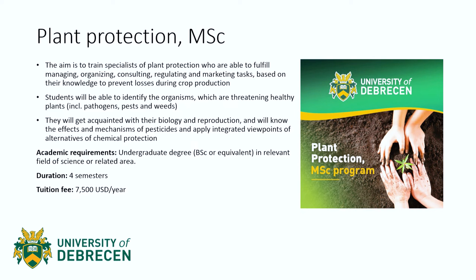Next is the plant protection master's degree. The aim is to train plant protection specialists who are able to fulfill managing, organizing, consulting, regulating, and marketing tasks to prevent losses during crop production. Students will be able to identify organisms threatening healthy plants — for example, pathogens, pests, and weeds — and will learn about their biology and reproduction, the effects and mechanisms of pesticides, and integrated alternatives to chemical protection. The academic requirements are an undergraduate degree in a relevant field of science or related area. The duration is four semesters, and the tuition fee is $7,500 US dollars per year.